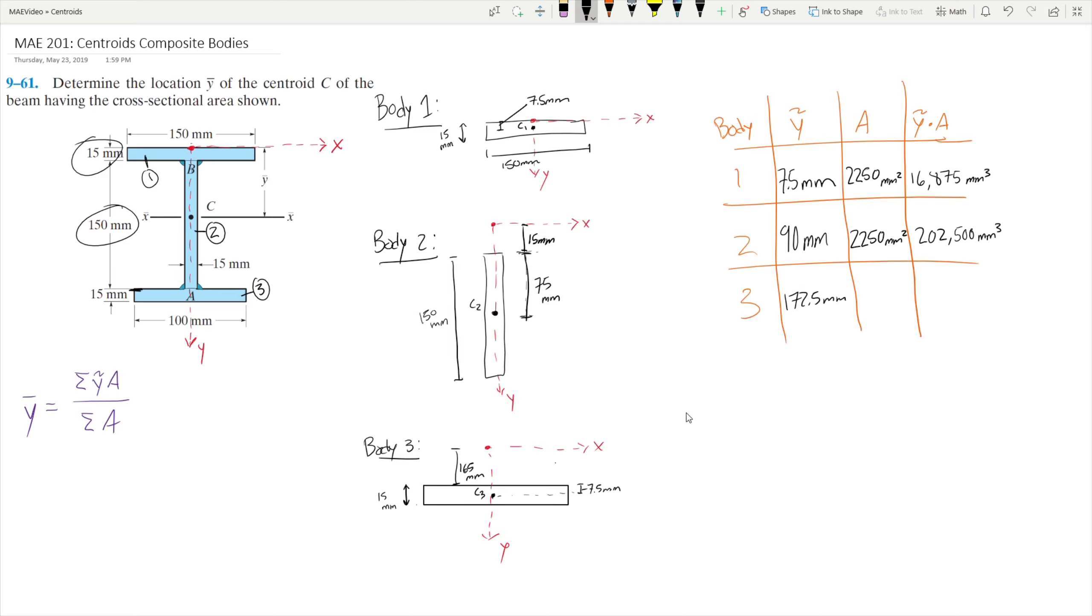Our area is just going to be 15mm times 100mm, which means our area is going to be 1500mm squared. And then our y-tilde times a is going to be 258,750mm cubed.